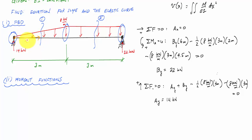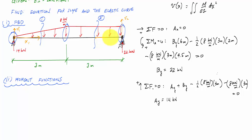For each cut I define a local origin and coordinate system. For cut one, I choose the left discontinuity as my origin, going to the right — I'll call that x1. Positive displacement is upward. For the second cut, I define a second vertical displacement function with distance x2 measured from the right end of the beam.